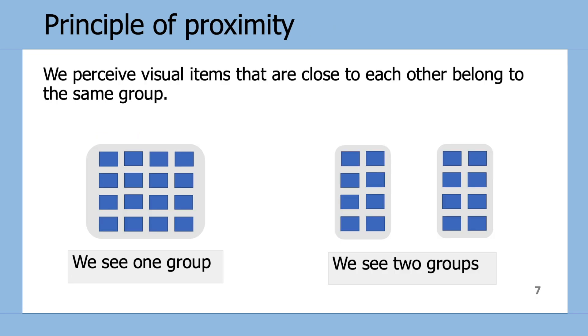Moving on to the Principle of Proximity, this states that humans perceive visual items that are close to one another in space as belonging to the same group. So on the left-hand side all the boxes are fairly close to one another, so we see that as one large group, where on the right-hand side the gap in between the boxes makes us see this visualization as having two separate groups.